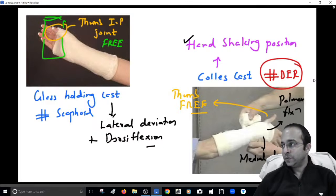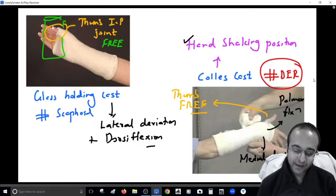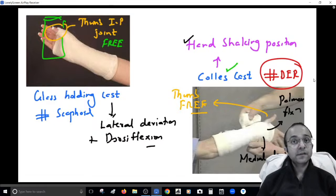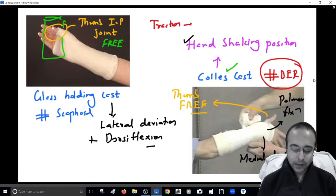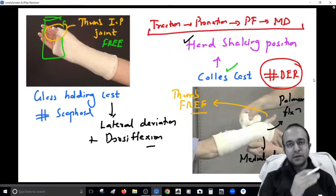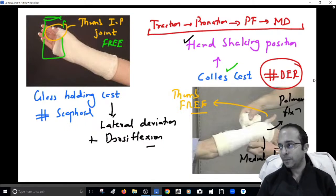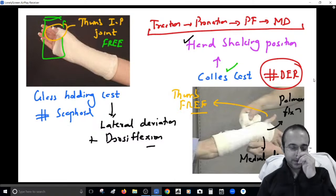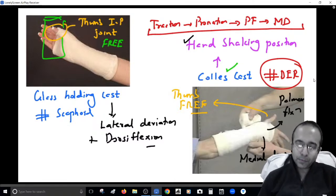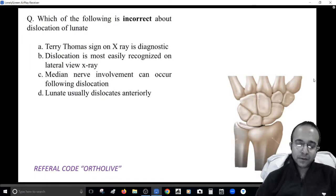There was a question in the INI-CET paper about the correct order of steps for applying a Colles cast: first give traction, then bring the hand into pronation, then apply palmar flexion, then medial deviation. Remember this order, as it was specifically asked as a step-arrangement question.